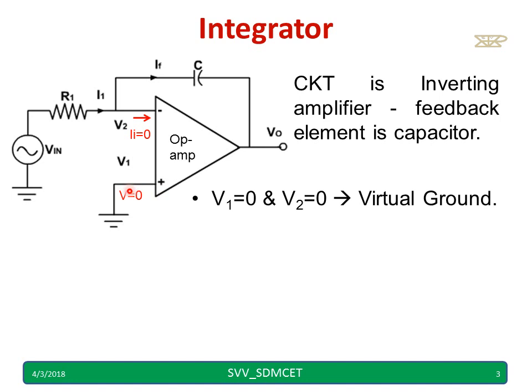V1 is grounded hence the voltage is 0 and V2 is also 0 because of the virtual ground concept. The difference between V1 and V2 should be 0. And the current flowing into the op-amp is 0 because the op-amp input resistance is infinity.